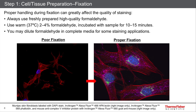On the left, you can see an example of poor fixation, where the cells have a fragmented appearance. These are cells labeled with phalloidin to label F-actin in red. On the right, you can see cells that were properly fixed — a nice morphology and good actin structure. These were fixed with formaldehyde.